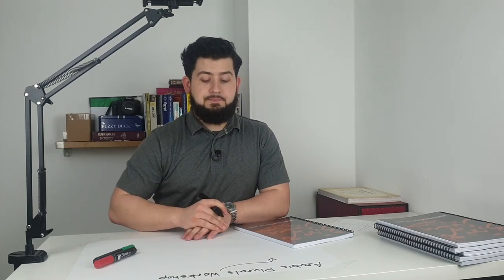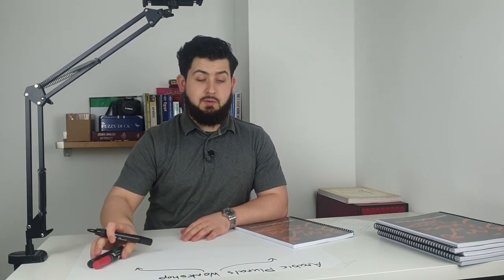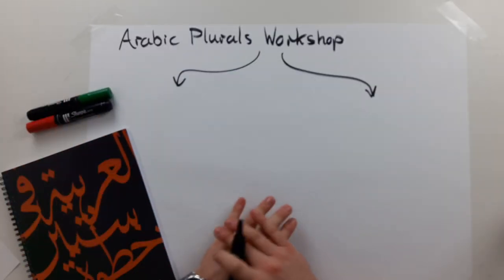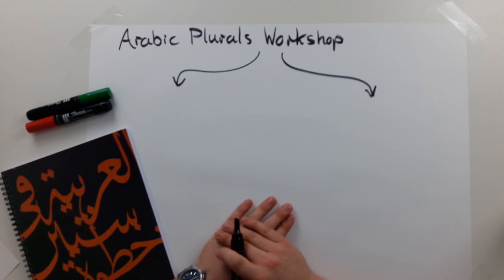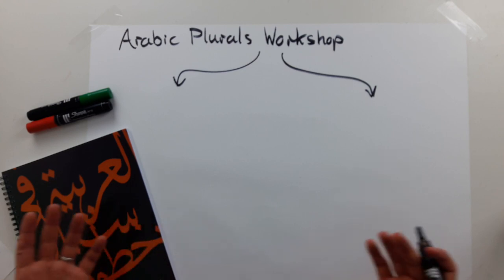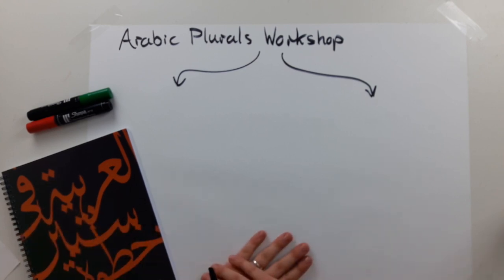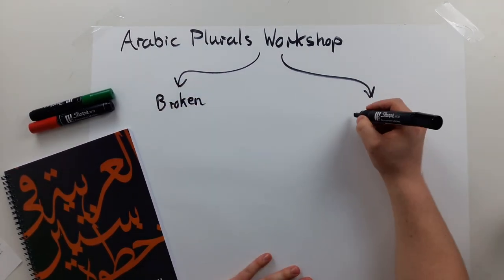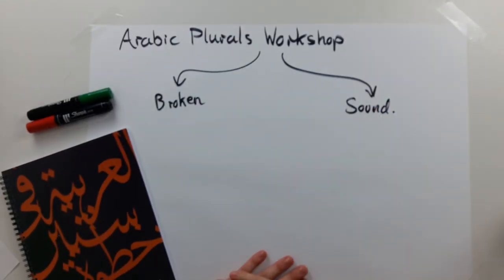Arabic plurals. Arabic plurals are pretty much of two kinds. It's actually very similar to English — I quite often like to draw parallels to English in my teaching, because sometimes something seems really challenging in Arabic and then we realize we actually do it in English too, or sometimes we even do something weirder in English. So we have two kinds of plurals: we have what we call broken plurals and we have what we call sound plurals.